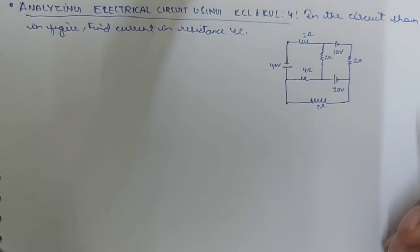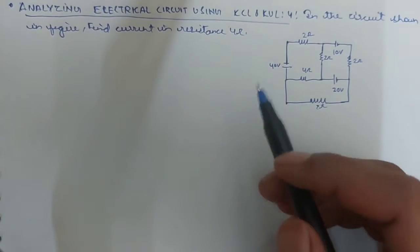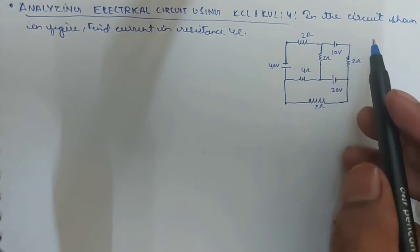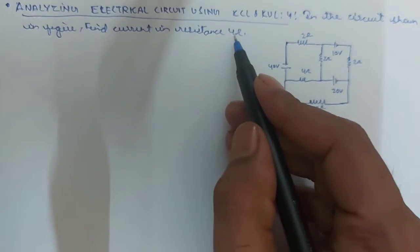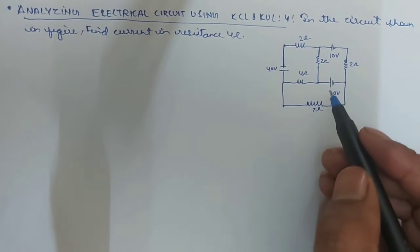Hello students, welcome back again to Siksha Science Academy. Here I am here with the new questions. In this circuit, you can see that you have to find out the current with the 4 ohm resistor over here.